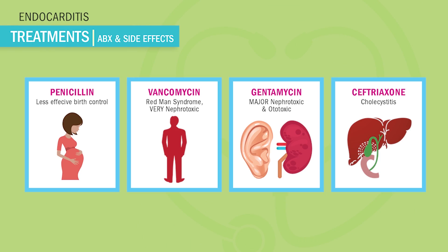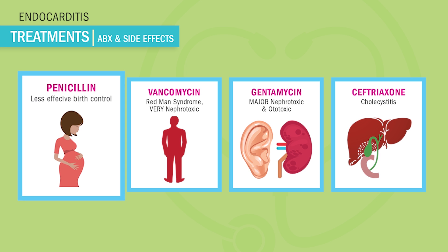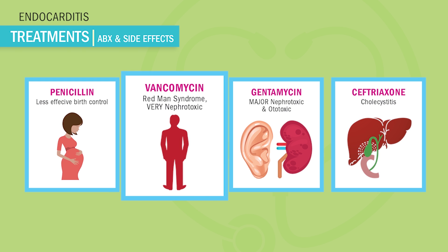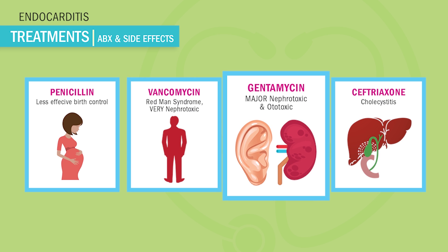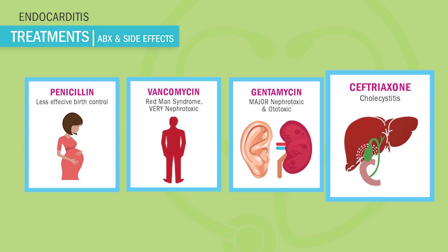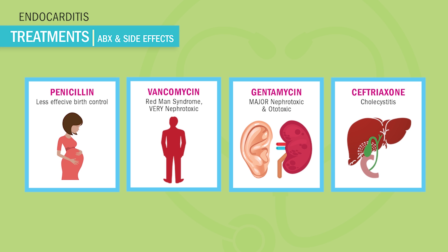Now the main antibiotics we use for infective endocarditis — and guys, these are the main testable side effects, so write these down. We'll break these down one by one, but let's do a quick overview. Penicillin has a side effect that makes birth control less effective. Vancomycin gives Red Man syndrome and mild nephrotoxicity, and is commonly used in place of penicillin for allergy patients. Gentamicin has major nephrotoxicity and ototoxicity — kidney and ear toxicity. And lastly, ceftriaxone, brand name Rocephin, causes cholecystitis, aka gallbladder inflammation.